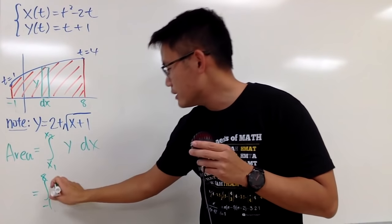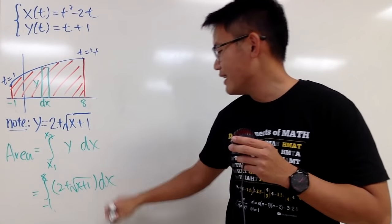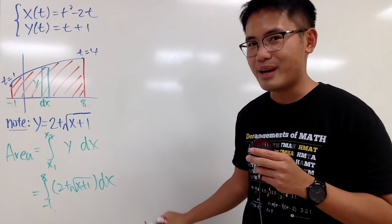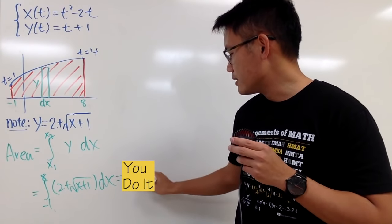And for the y, just enter this. 2 plus square root of x plus 1. And the dx is just dx. And this is your good old integral for the areas. And I would just like to tell you the answer to this is... And that's all.